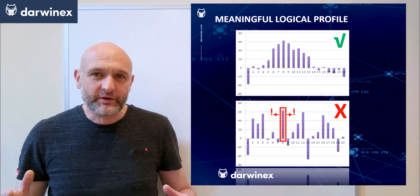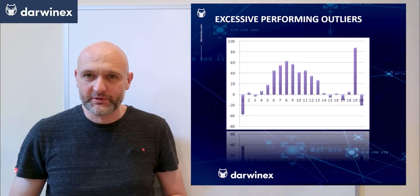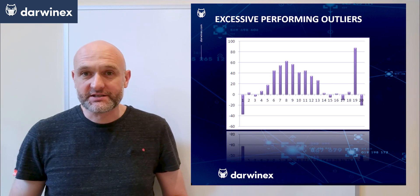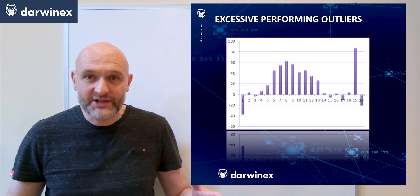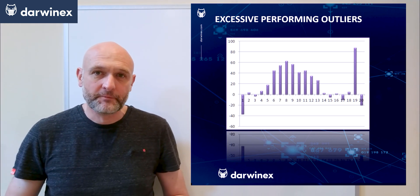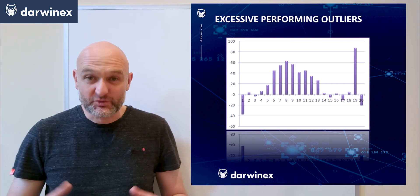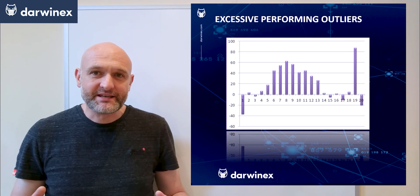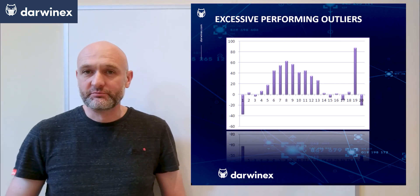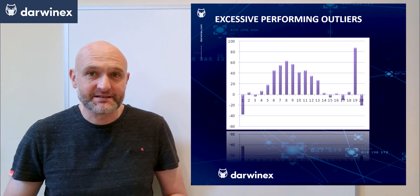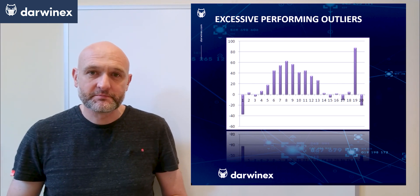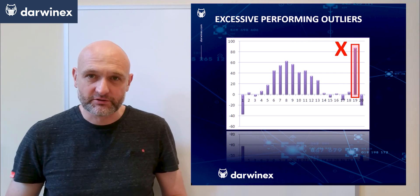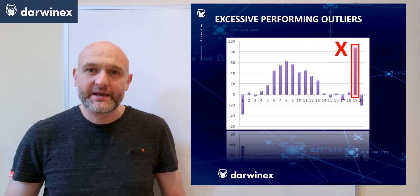The next warning flag is for outliers with excessive performance. This often occurs when the sample sizes for the parameter values are at either edge of the profile or small, and it's often the case that these edge parameter values produce fewer trades. When this happens, it's much easier to get extreme levels of performance — both positive and negative — for these specific parameter values. When this is the case, you must make sure you ignore these results no matter how good they appear to be.